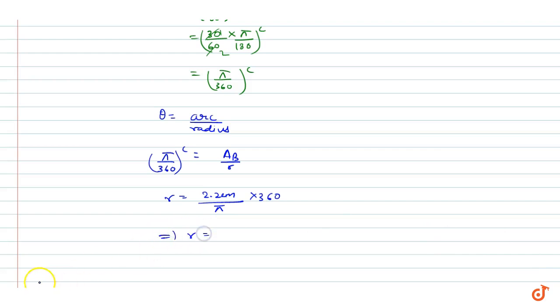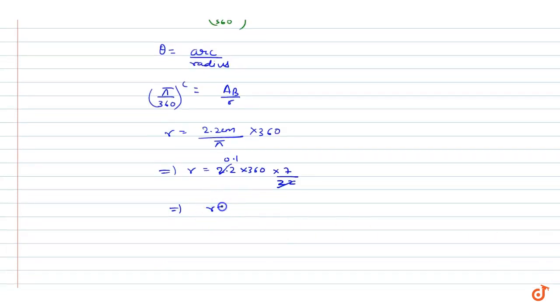The value will be R equals 2.2 times 360, and taking pi as 22 by 7, this gives us R equals 7 times 36, that is R equals 252 cm. This is our answer.